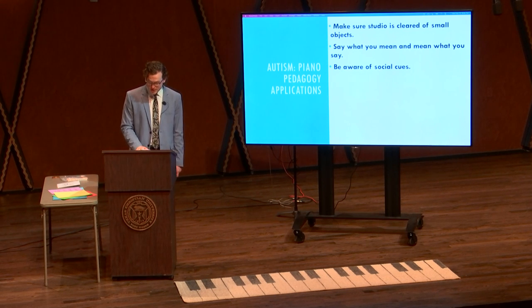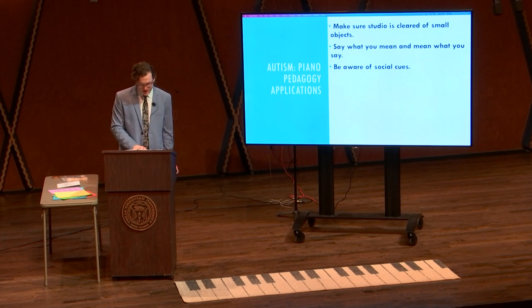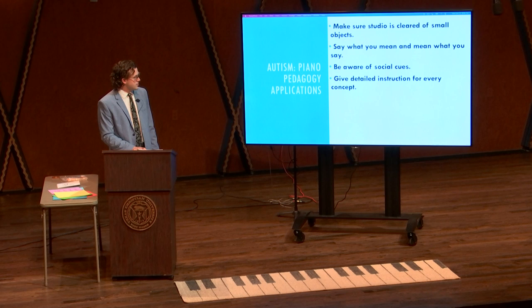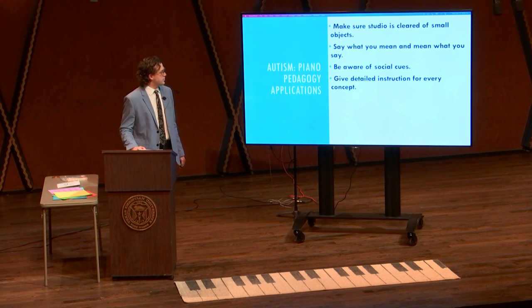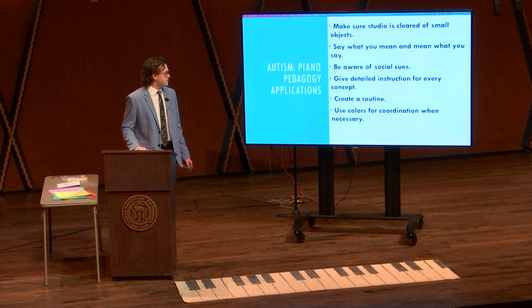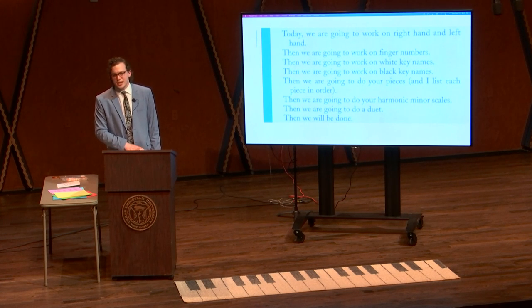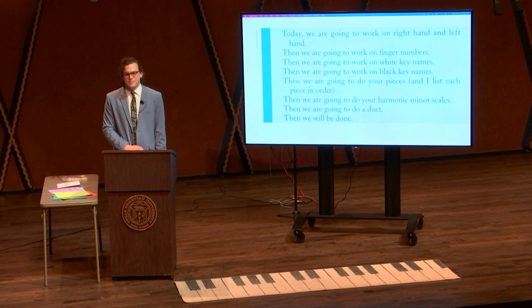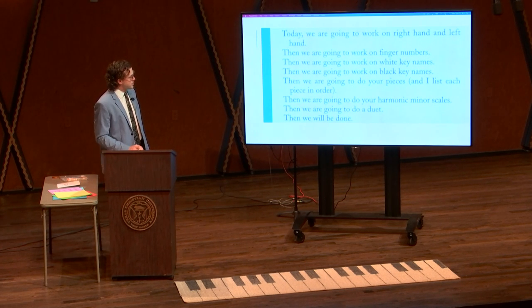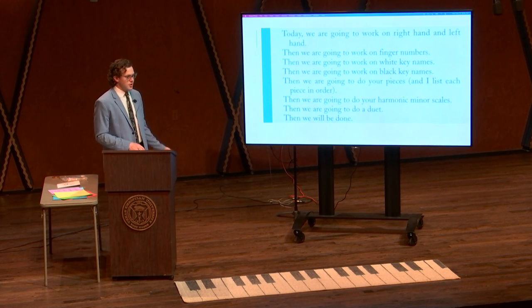Be aware of social cues — be especially aware of the student's emotions and behavior. If a student appears scared, sad, afraid, or frustrated, be especially careful with your responses. Give detailed instructions for every concept. Create a routine. And use colors for coordination when necessary. An example of a routine, from an article by Scott Price: he explains his lesson time saying, 'Today we're going to work on the right hand and left hand. Then we're going to work on finger numbers. Then we're going to work on white key names. Then we're going to work on black key names. Then we're going to do your pieces.' Being very clear with the routine and what they will be doing throughout the lesson.